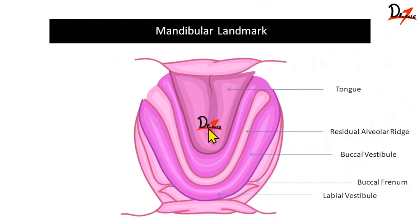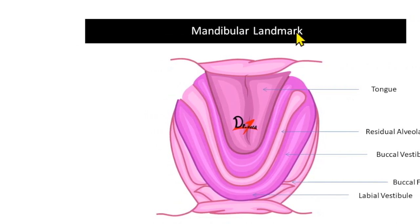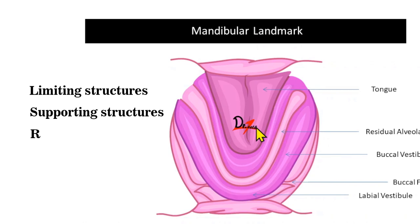First we'll be studying the basic types of mandibular landmarks. This is the tongue. The light pink area is the residual alveolar ridge. This is the vestibule area. The vestibule on the buccal side is the buccal vestibule and the vestibule on the labial side is the labial vestibule. This is the frenum. The frenum on the buccal side is the buccal frenum and the frenum on the labial side is the labial frenum. Now: limiting structures, supporting structures, and relieving structures.